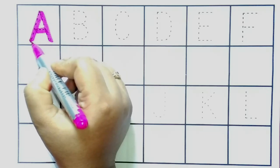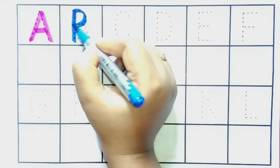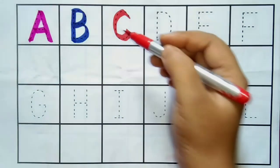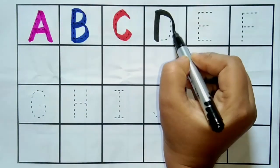A, A for aeroplane. A for aeroplane. B, B for ball. B for ball. C, C for cat. C for cat. D, D for doll.